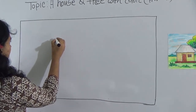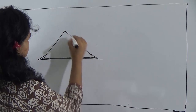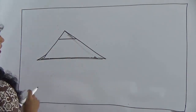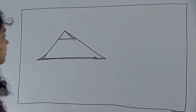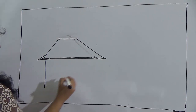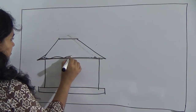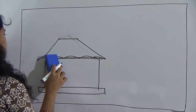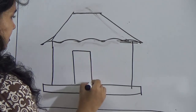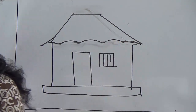First I will draw a triangle shape. Look, I have drawn the triangle shape. Then you draw a line like this. And then you draw the square and give the rectangle a window by drawing a square also.